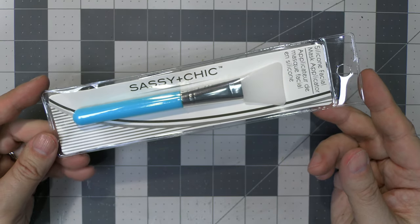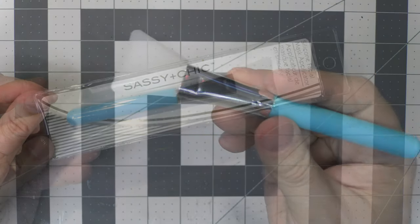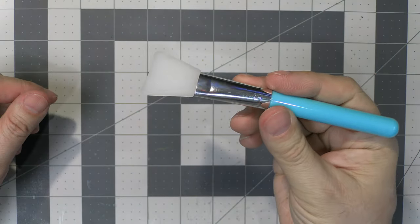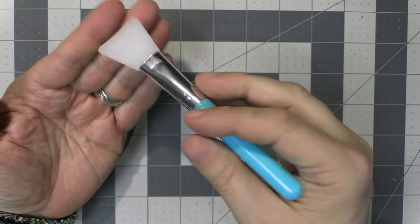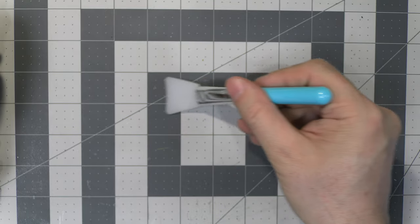This interesting tool is a mask applicator, which would be used to put different kinds of goos on your face, spread them out. But it'd be good for us to spread out our goo all over our terrain and craft products. So this is a great little find.